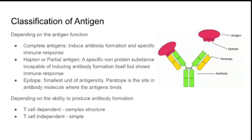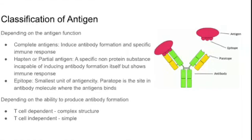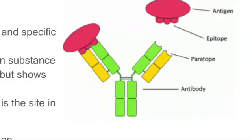A partial antigen is otherwise called a hapten. Epitope and paratope are the two sites where attraction happens between antigen and antibody. The epitope is the site on the antigen that attracts the antibody, and the paratope is the site on the antibody that attracts the antigen. For example, if the red one is the antigen, the paratope is the site of attraction on the antibody and the epitope is the site of attraction on the antigen.